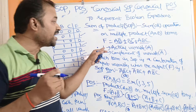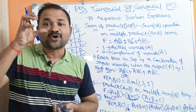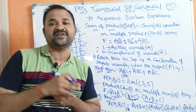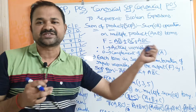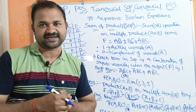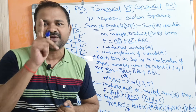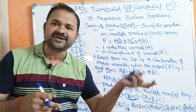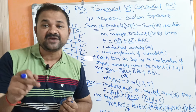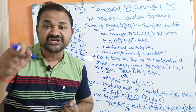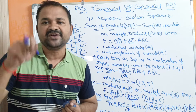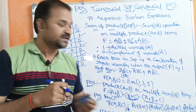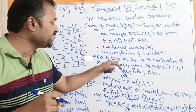SOP and POS are entirely different. In SOP, 1 means the actual variable and 0 means the complement of the variable. Whereas in POS, 0 means the actual variable and 1 means the complement of that variable.